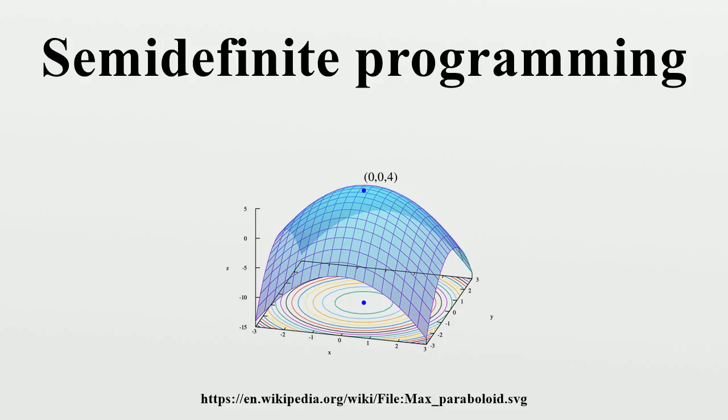Motivation and definition. Initial motivation: A linear programming problem is one in which we wish to maximize or minimize a linear objective function of real variables over a polytope. In semidefinite programming, we instead use real-valued vectors and are allowed to take the dot products of vectors. Non-negativity constraints on real variables in LP are replaced by semidefiniteness constraints on matrix variables in SDP. Specifically,